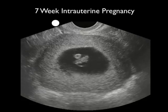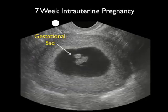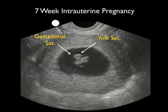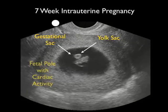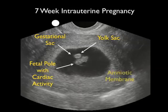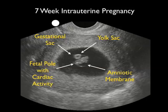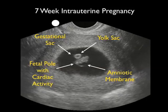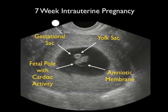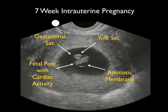Here's another intrauterine pregnancy at about 7 weeks, again in the transvaginal short axis view. Note the good amount of uterus surrounding the gestational sac, signifying the fundal location. We see the yolk sac, or cheerio sign, and the fetal pole stretched out below it, with positive cardiac activity. We also see another very important finding: the amniotic membrane billowing out from around the fetal pole. Eventually, the amniotic membrane will plaster down on the margins of the gestational sac to form the amniotic cavity, in which further fetal growth will occur.